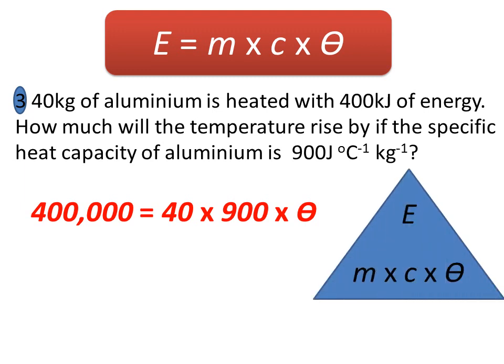So what always helps me is drawing it out as a triangle here with energy at the top, and for whichever one I'm trying to figure out I cover up with my finger, and there in the triangle you can see that energy is above mass times specific heat capacity, and that will give me theta, the one I've covered up.